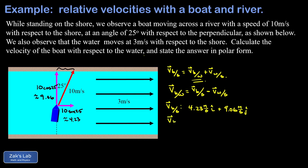The other vector we need is the velocity of the water with respect to the shore — that's a much simpler vector, just 3 m/s pointing to the right, so 3 m/s î. Since we're subtracting, we subtract 3 m/s from the î component of the boat-shore velocity. We don't do anything to the ĵ component because the water is moving perfectly horizontally.